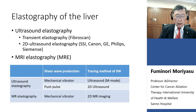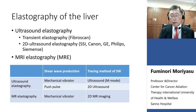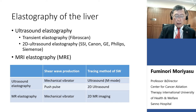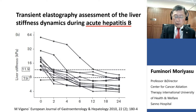MRI elastography is now commercially available. Shear waves are provoked by a mechanical vibrator in MRI. This is the time change of propagation speed measured in patients suffering from acute hepatitis B.